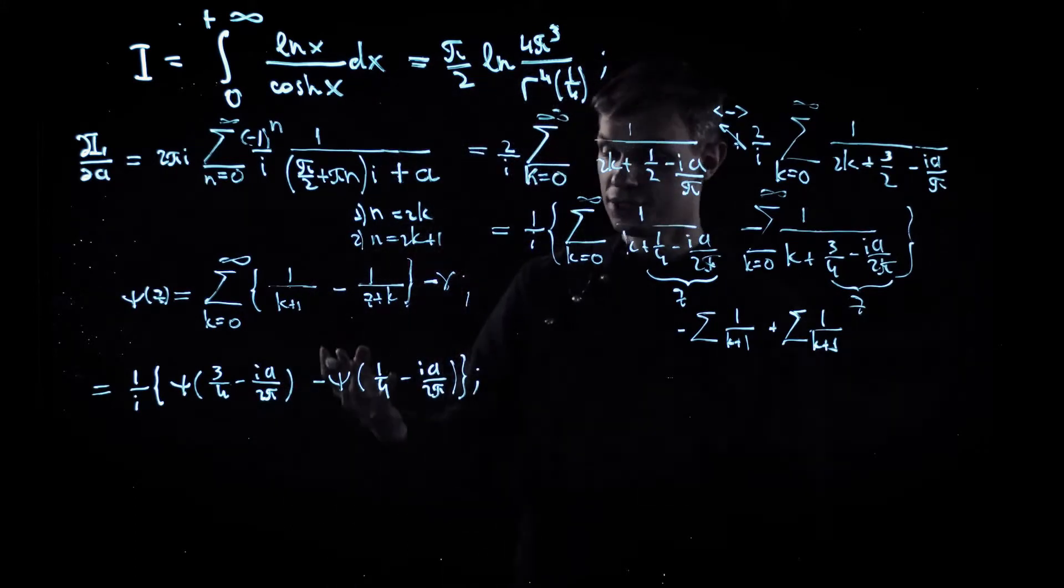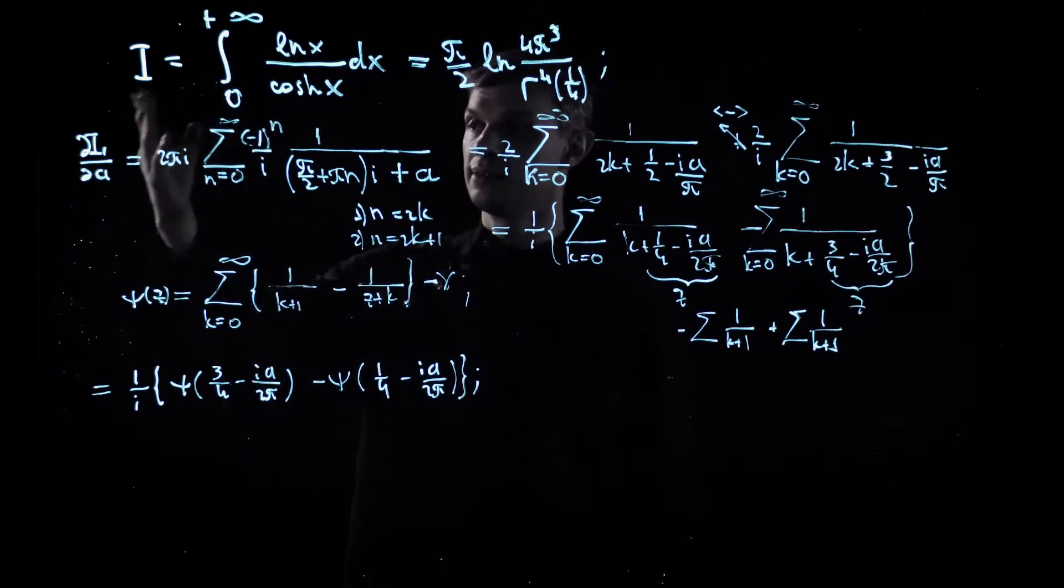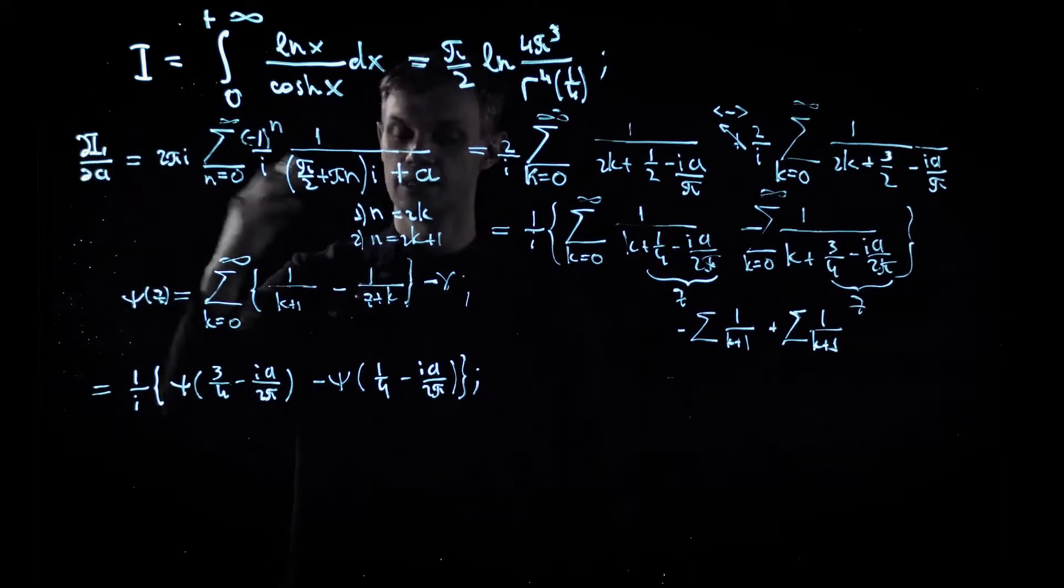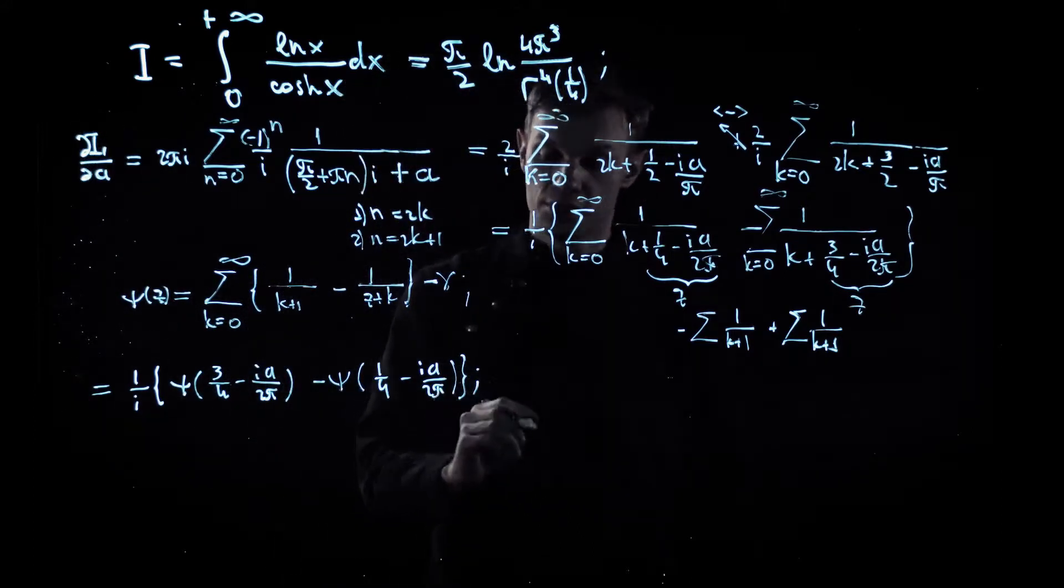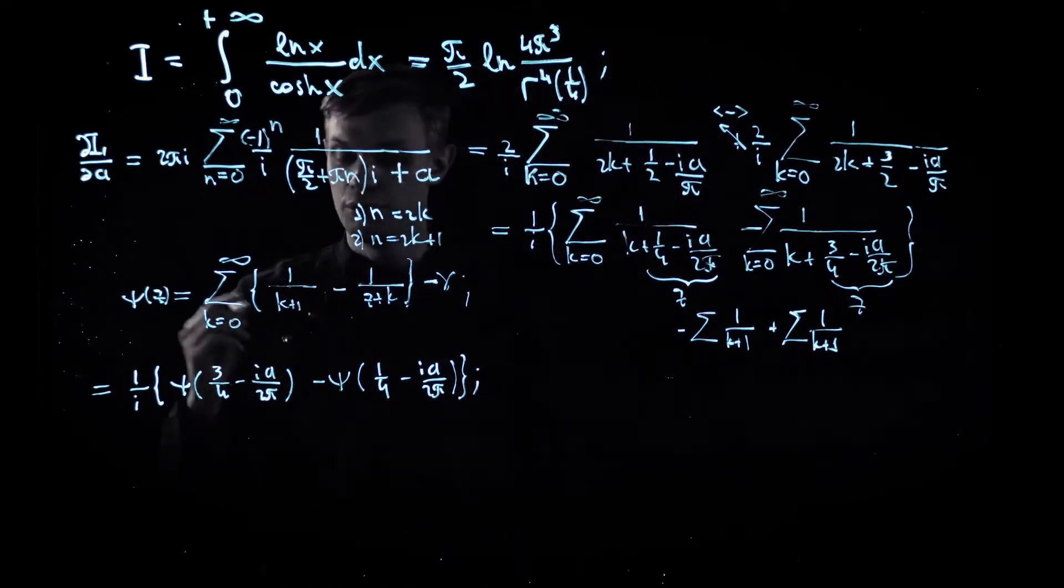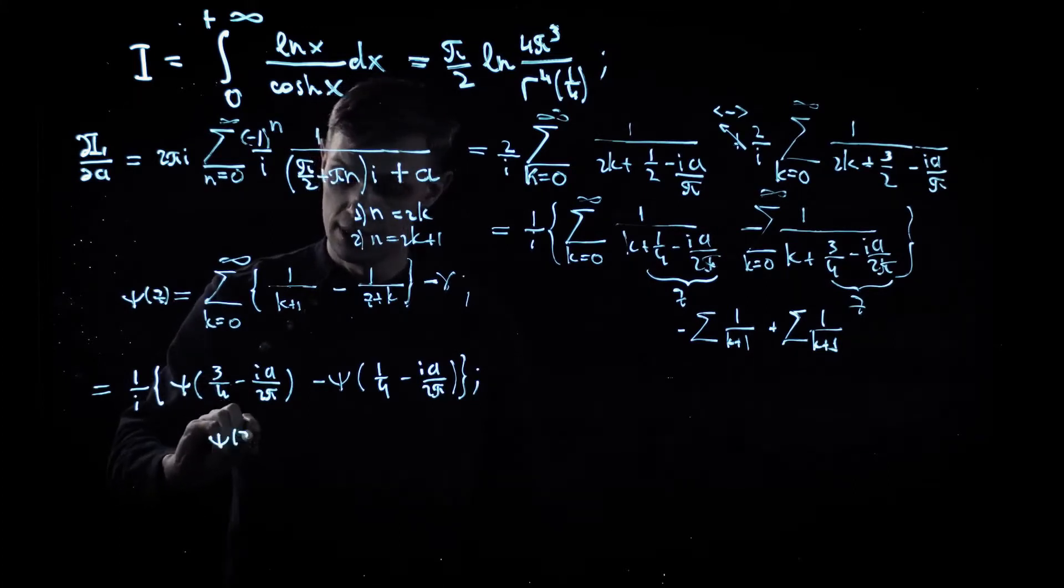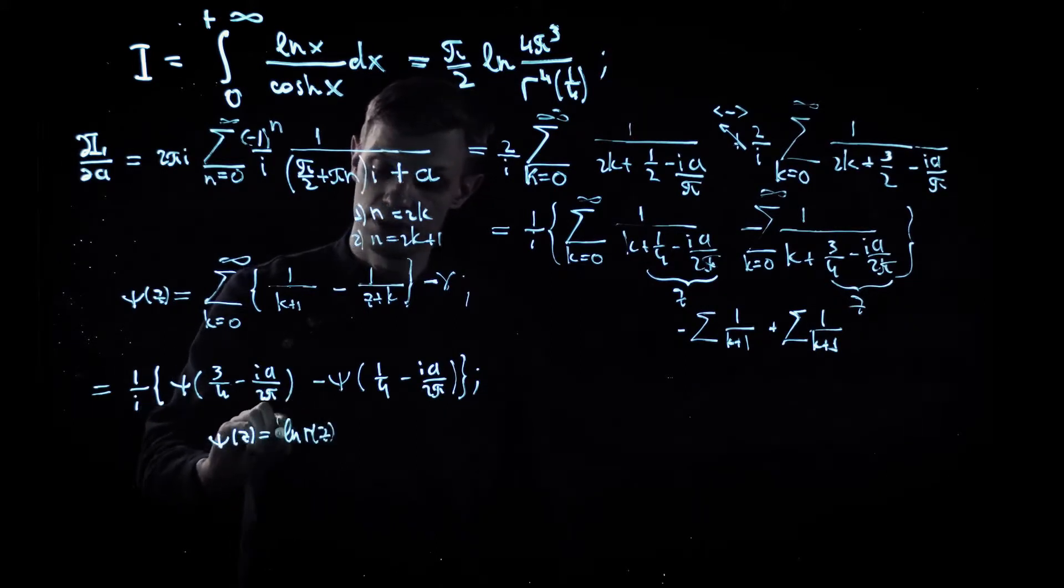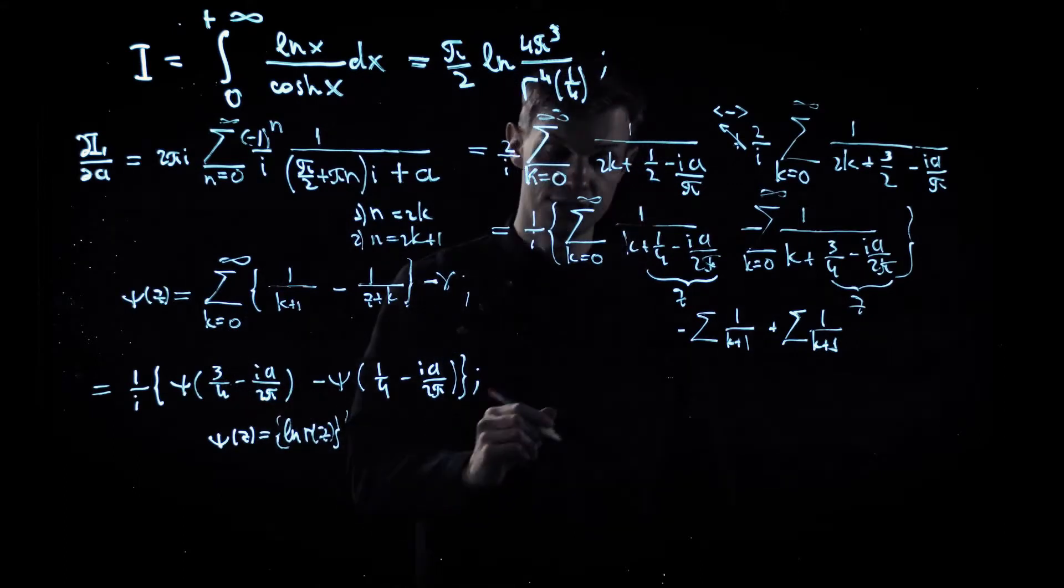Right, so now it's a partial success because we computed the integral but it's a derivative. So in order to restore the original integral, we need to integrate the left-hand side and the right-hand side of our equation. When doing so, the key point is to recall the definition of the digamma function: digamma function is a log derivative of the Euler gamma function, so it's very easy to integrate.